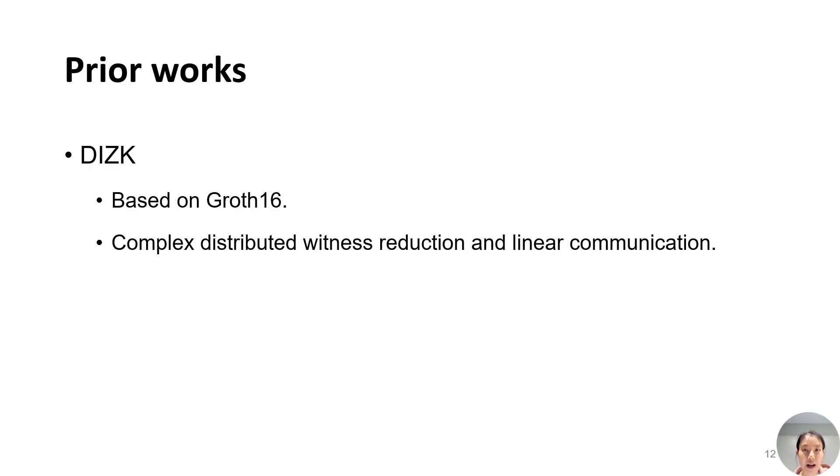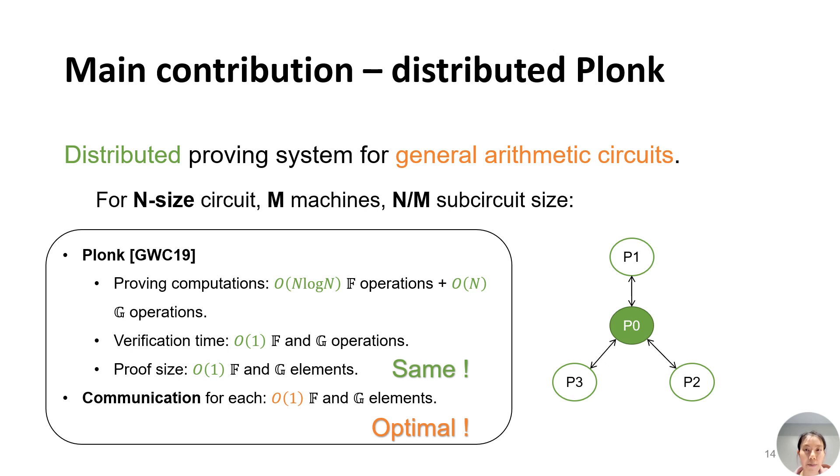There are some prior works of distributed succinct ZKP protocols. The first one is DIZK, which is based on Groth16 and R1CS arithmetic system. It has complex witness reduction and requires linear communication. The second one is zkBridge, which is based on GKR protocol and Virgo polynomial commitment, and also requires linear communication. In our work...